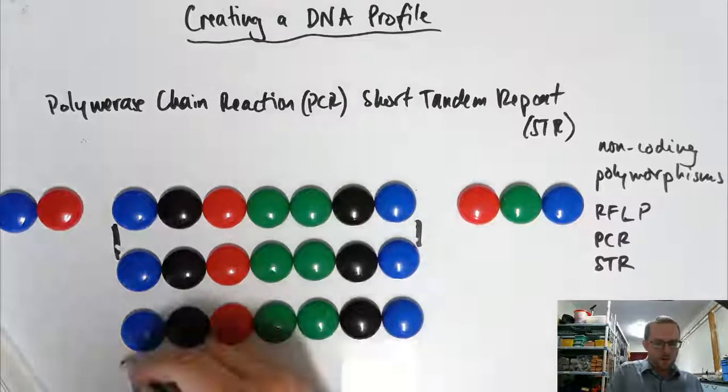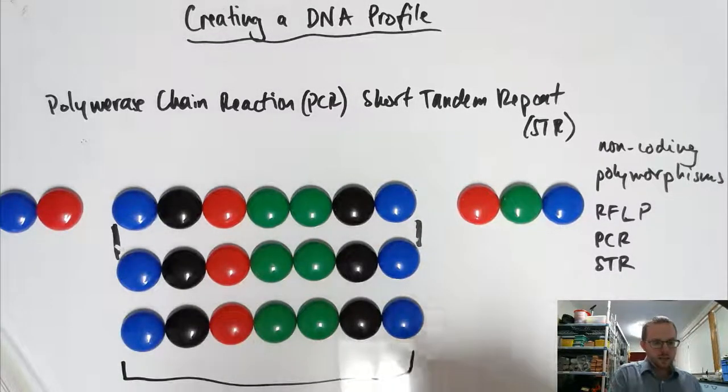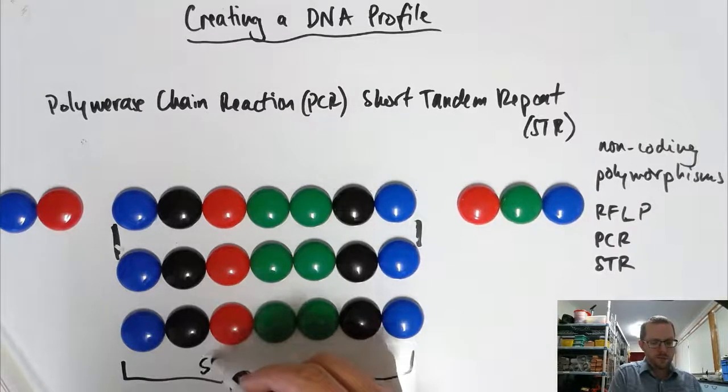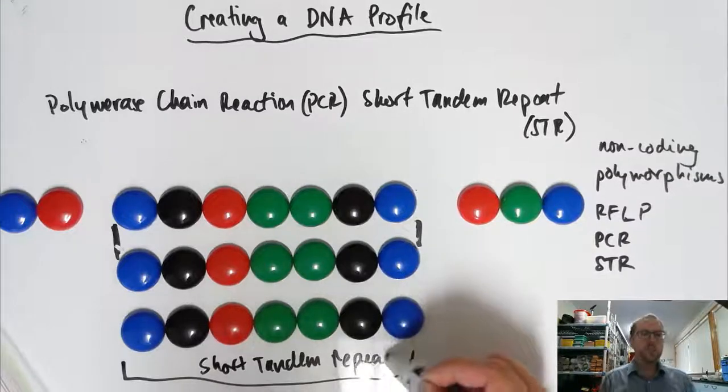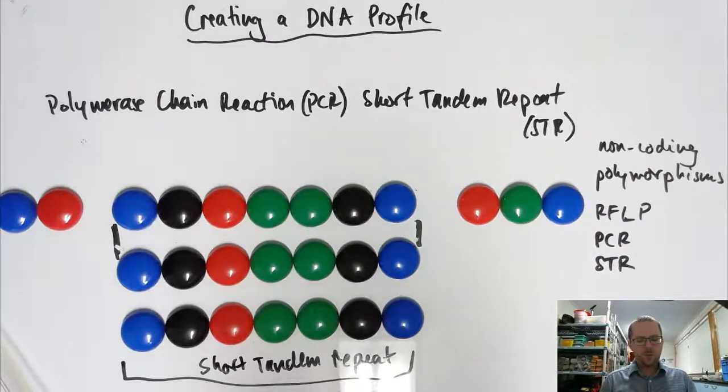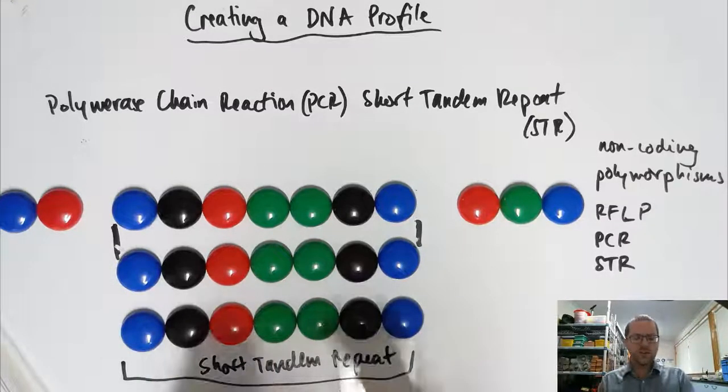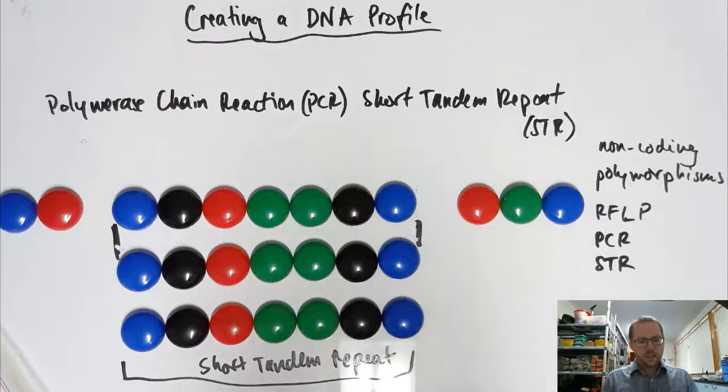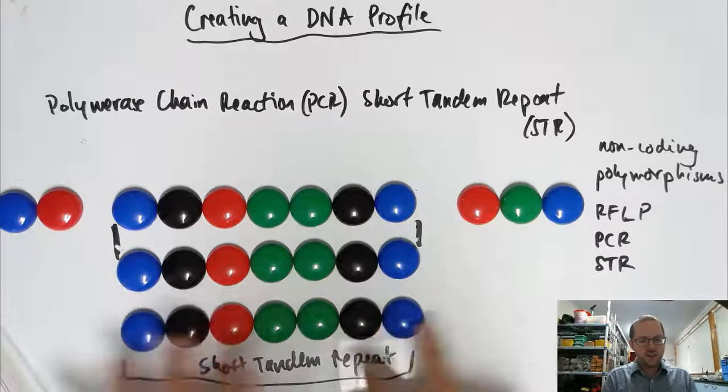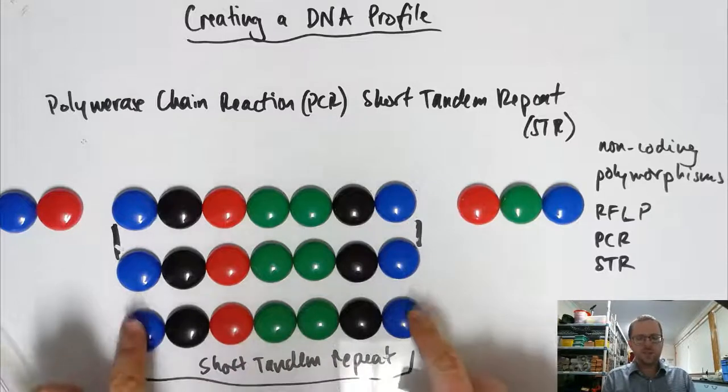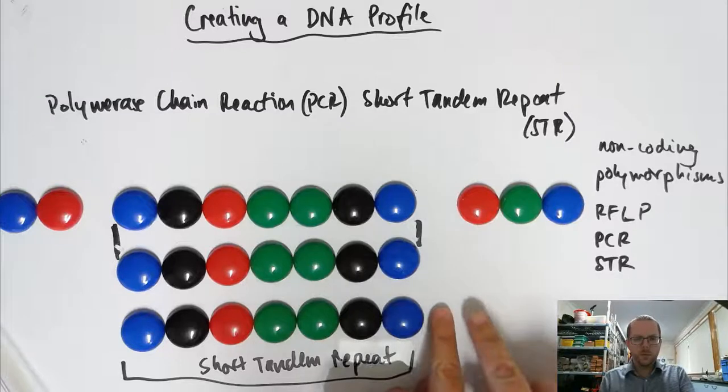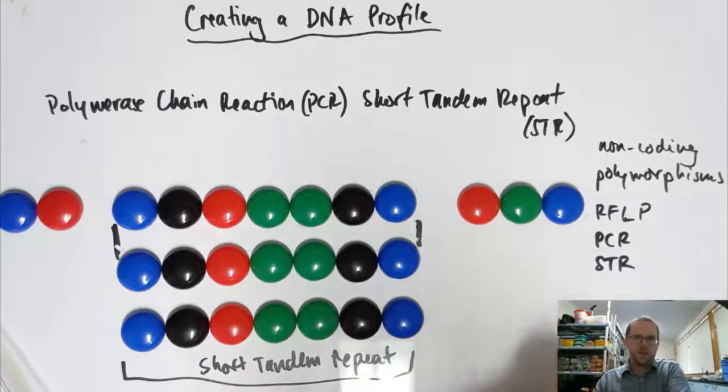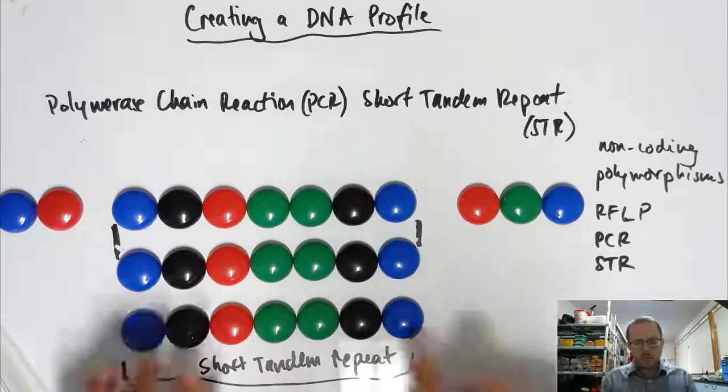And the type of polymorphism that we're looking at here is called our Short Tandem Repeat. Polymorphisms, generally speaking, are just an area where it changes a lot. The Variable Number Tandem Repeat is the type that we're looking at here where it's a section that repeats over and over again. So perhaps in this area, it's this sequence that we're looking at, this series of seven bases. And then we see another - blue, black, red, green, green, black, blue - repeating multiple times over.